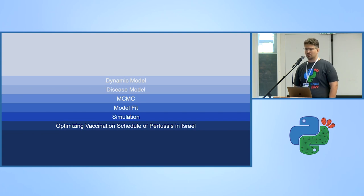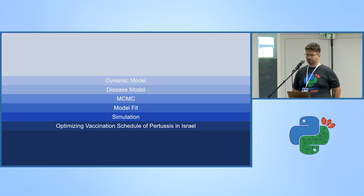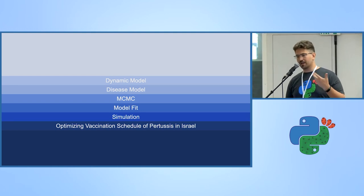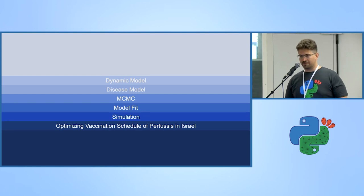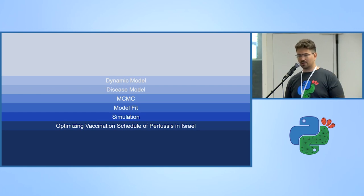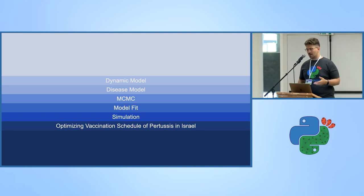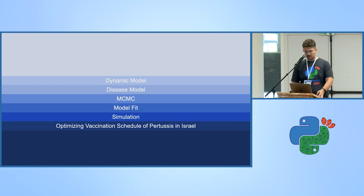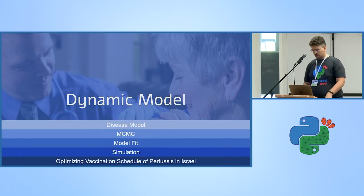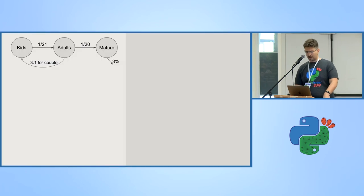The first part will cover dynamic models — disease models are a specific kind of what's called a dynamic model. Then we'll talk about a disease model specifically. After that we'll learn about MCMC, Markov Chain Monte Carlo. Part four is fitting a disease model to data, part five is simulating futures, and part six I'll talk about my thesis and how all five parts came together into university-level work.